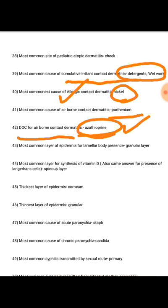Most common cause of acute paronychia is Staph; most common cause of chronic paronychia is Candida. Most common syphilis transmitted by sexual route is primary syphilis; most common transmitted from infected mother is secondary syphilis.